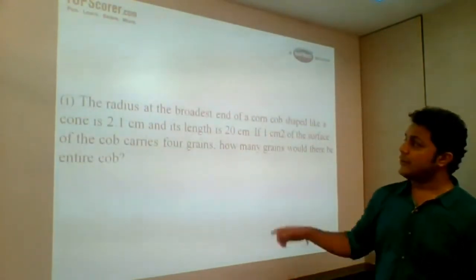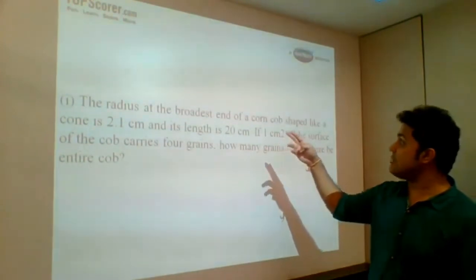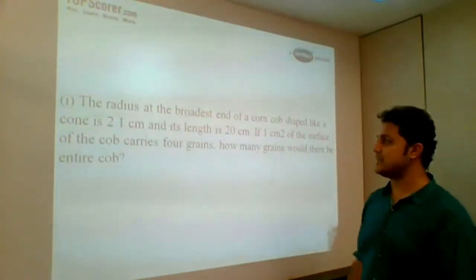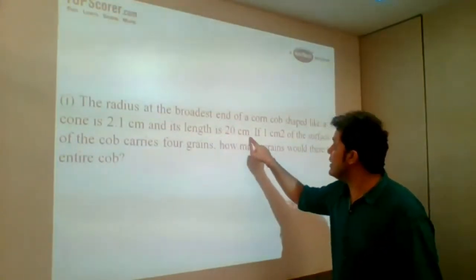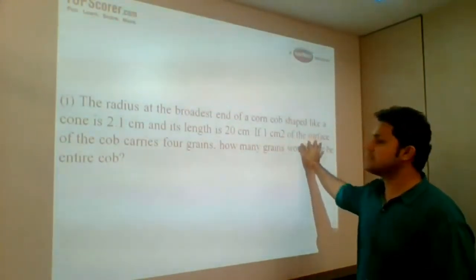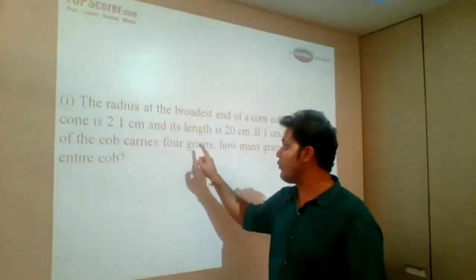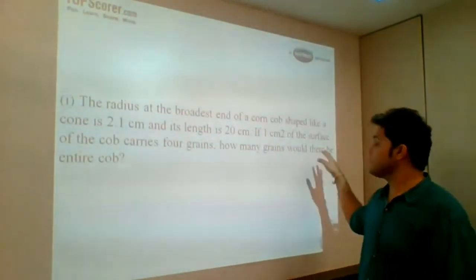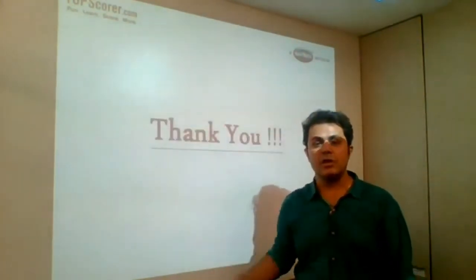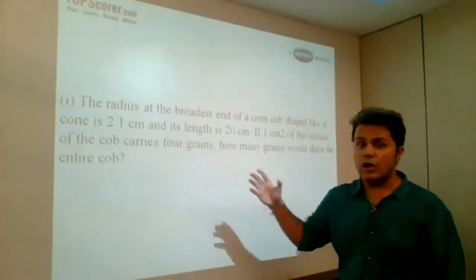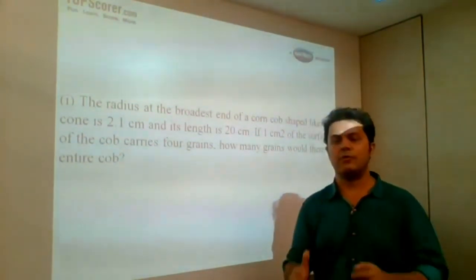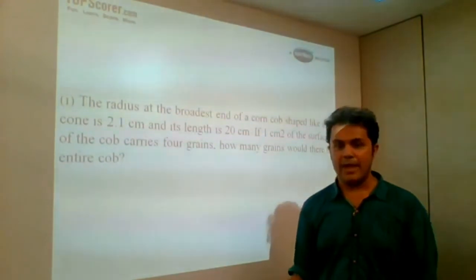For geometry, the radius at the broadest end of the corn cob, shaped like a cone, is 2.1 cm and its length is 20 cm. If 1 cm² of the surface of the cob carries 4 grains, how many grains would be there in the entire cob? This is the question which is again non-textual but based on the syllabus. Such type of questions can come for your exam.